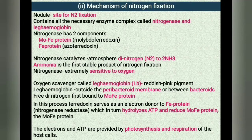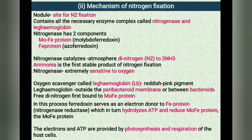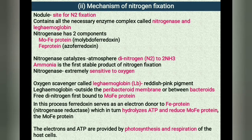The nodule serves as a site for nitrogen fixation. It contains all necessary biochemicals such as the enzyme complex called nitrogenase and leghemoglobin, which is otherwise called leguminous hemoglobin. Nitrogenase has two components: the MoFe protein (molybdoferredoxin) and the Fe protein (azoferredoxin). The nitrogenase catalyzes the conversion of atmospheric dinitrogen to ammonia. Ammonia is the first stable product of nitrogen fixation. The nitrogenase is extremely sensitive to oxygen.